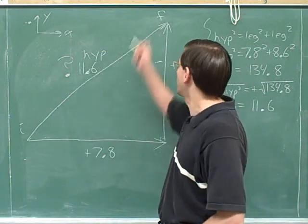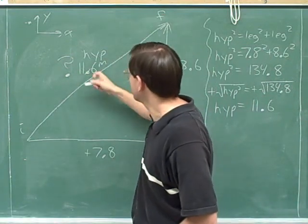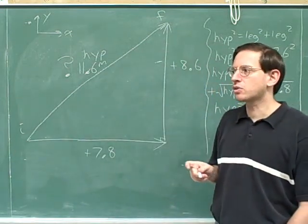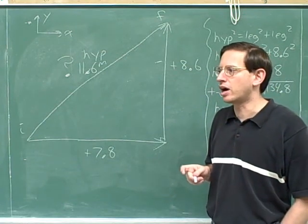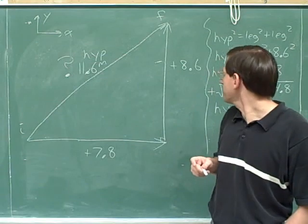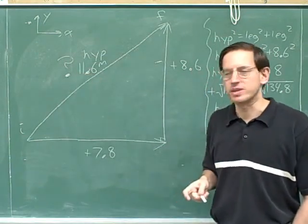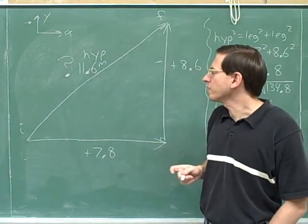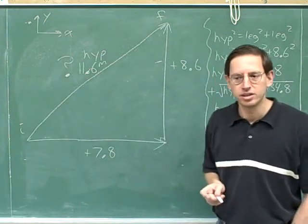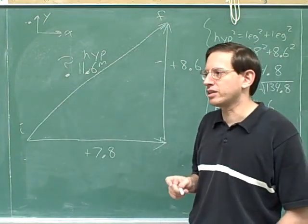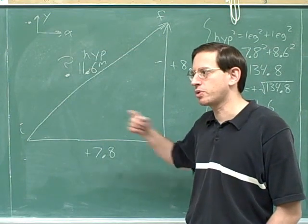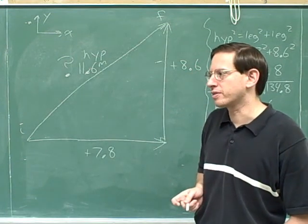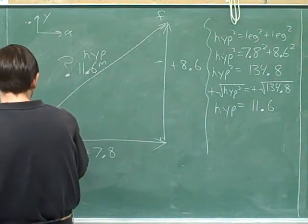We've figured out that our final position is 11.6 meters from the initial position. But in a sense we haven't quite finished the problem — we haven't really found our overall resultant displacement. All we found is the magnitude; we've just found the length of this arrow. We haven't figured out the direction. Our initial path was making an angle of 30 degrees, and our subsequent path was making an angle of 60 degrees.